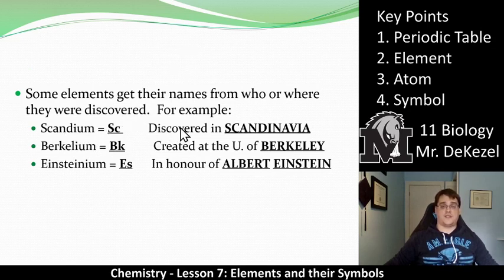Some are named after where they were discovered or the people who discovered them. So, Scandium was discovered in Scandinavia. That's like Norway and Finland and all that good stuff up there. There's Berkelium, which has a symbol BK and was created at the University of Berkeley. And then we have Einsteinium, which is ES, and it was named in honor of Albert Einstein who discovered it.